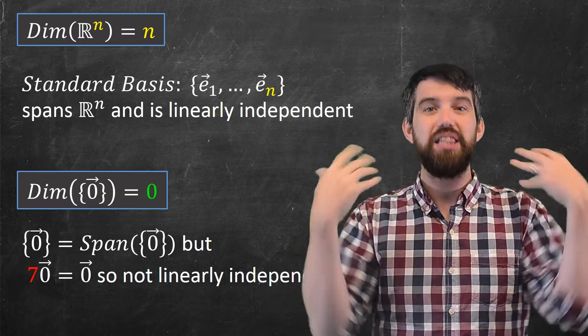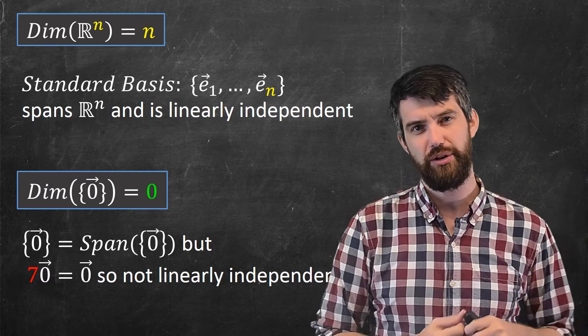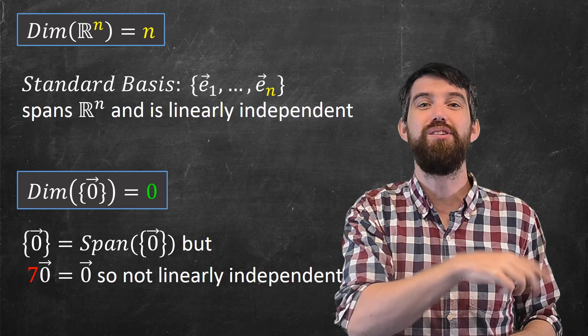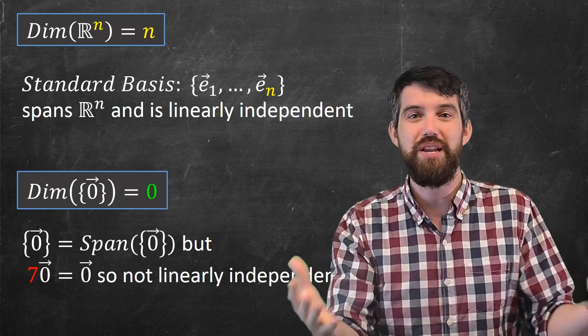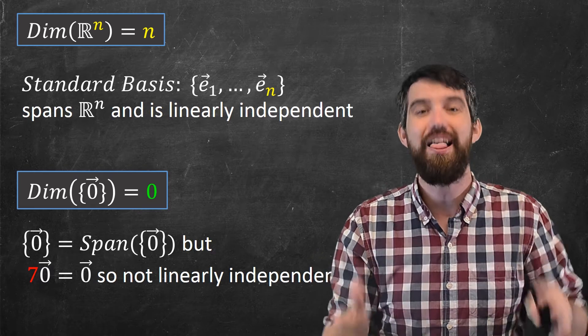For example, if I take a linear combination of this particular vector, like seven times zero, well, then that's equal to zero, but the coefficient seven is not zero. Remember, a linearly independent set, if you take a linear combination equal to zero, all of the coefficients have to be zero. But that's not the case here.